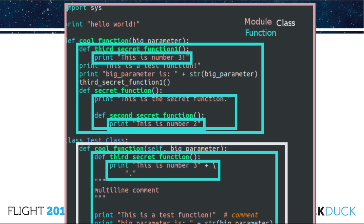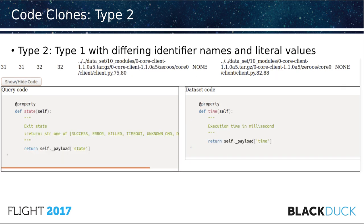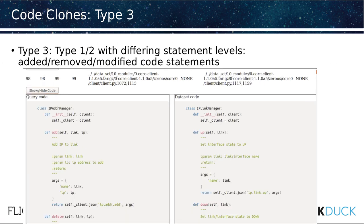Here's an example of a type 1 clone — these are code clones that have identical code segments. All identifiers are the same, all literals are the same. Type 2 is a type 1 with differing names and literal values. In this case, we've got 'state' and 'time' — they have different identifier names but effectively do the same thing; tokens like literals are replaced. Type 3 is an augmented or adapted one, whereby extra information is added — different comments, different features, different lines, with modifications internally.